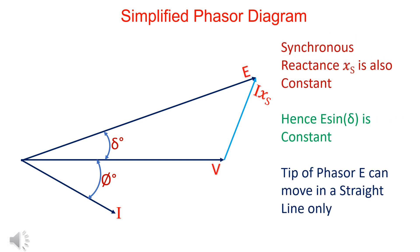Synchronous reactance Xs is also constant. Hence, E sin delta is constant. The tip of the phasor E can move in a straight line only.